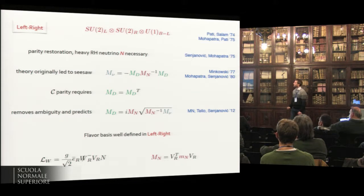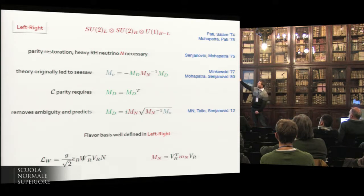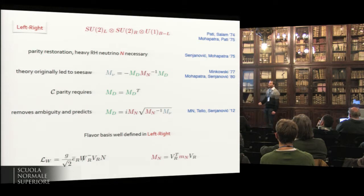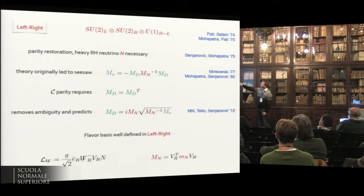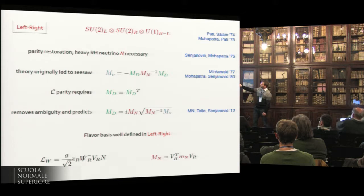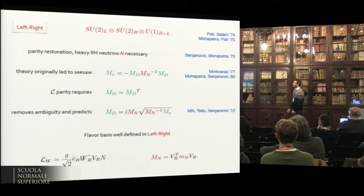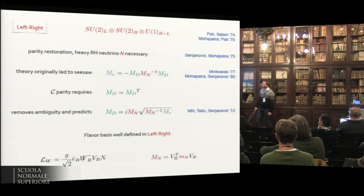In left-right symmetry, the situation is a little different. This theory restores parity at some high scale, so there is a relation between left and right. Right-handed neutrinos are necessarily present by anomaly cancellation, and this is the theory that originally led to the seesaw. By left-right parity, the Dirac mass matrix has to be symmetric, which removes the ambiguity. If you observe the heavy right-handed neutrino, you can really predict the Dirac mass, giving a gain in terms of flavor predictivity. The flavor basis is well-defined in such theories. If you can measure this charged current, you can measure the heavy Majorana mass.